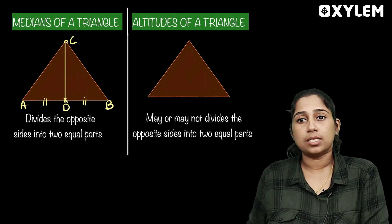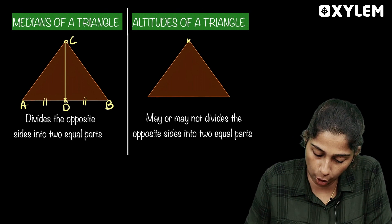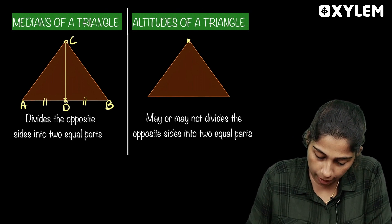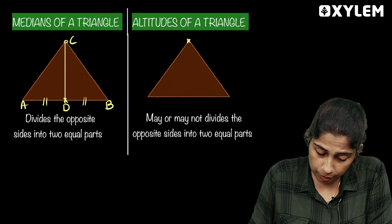This is the altitude. This is the acute angle triangle — the altitude can be compared.